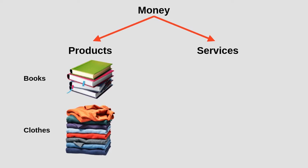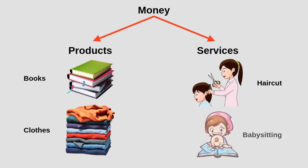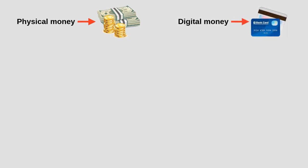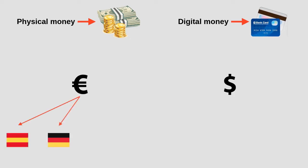Money is also used for services such as a haircut or babysitting. We can have money in a physical form such as coins and bills, or in digital or electronic form such as debit cards or cryptocurrencies. Depending on the country we live in, we can have a different type of money called currency. For example, the euro is the currency of some European countries such as Spain and Germany. The US dollar is the currency of the United States.